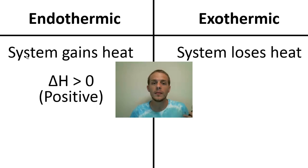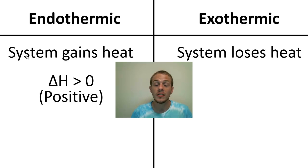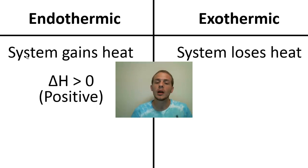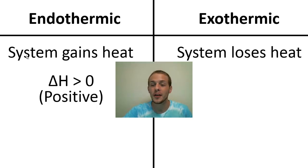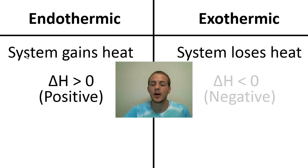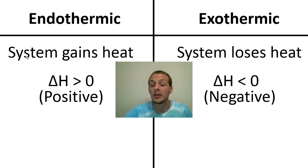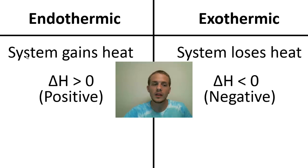Delta H follows the same sign convention as delta E, the change in internal energy. Anything done on the system is considered positive; anything done on the surroundings is considered negative. So in an exothermic process, the sign of delta H is going to be negative — less than zero.